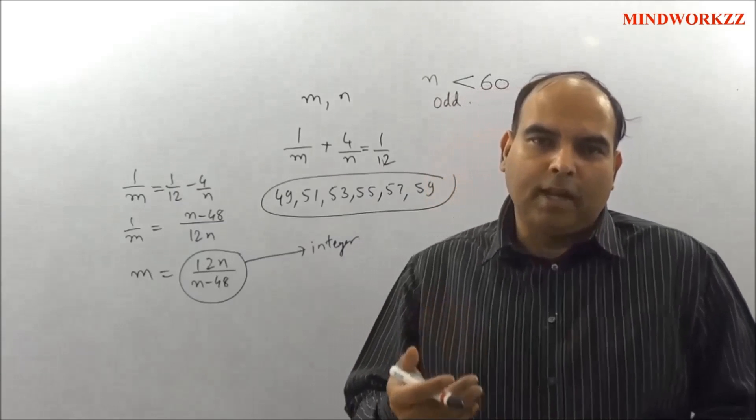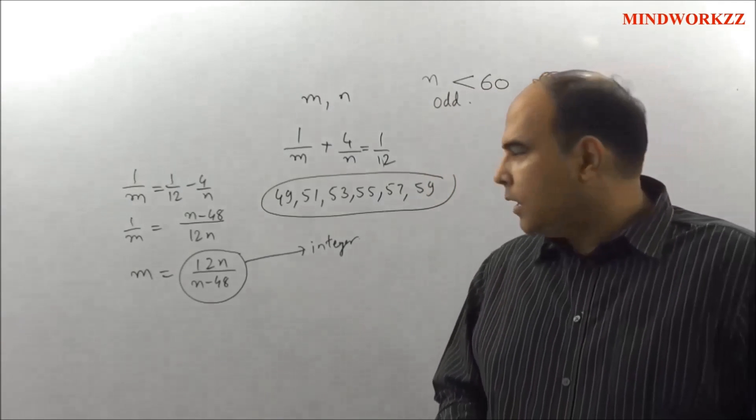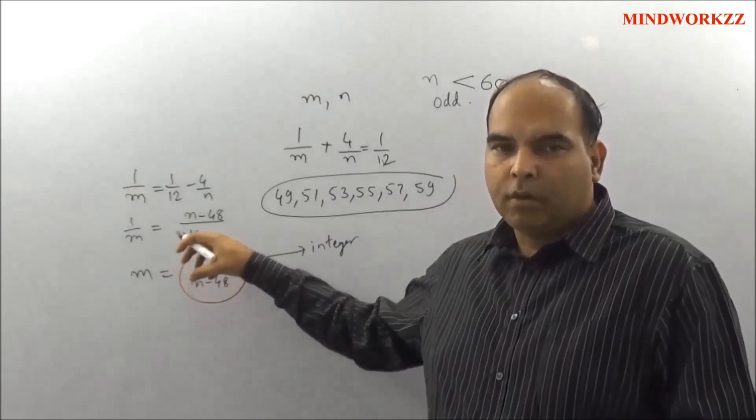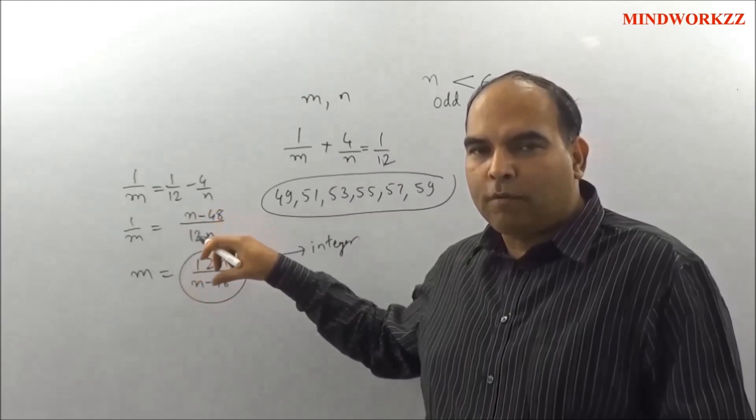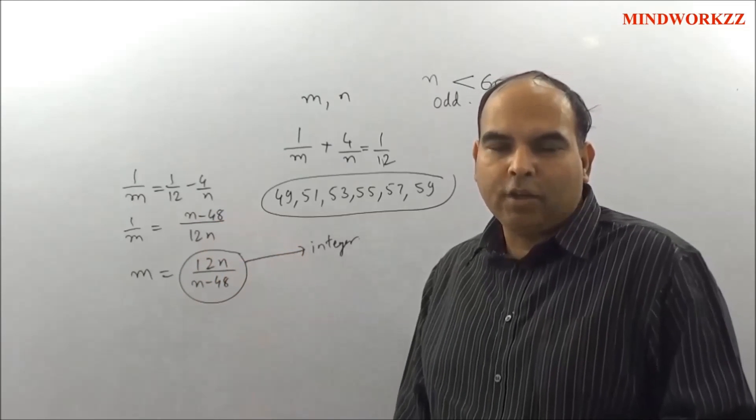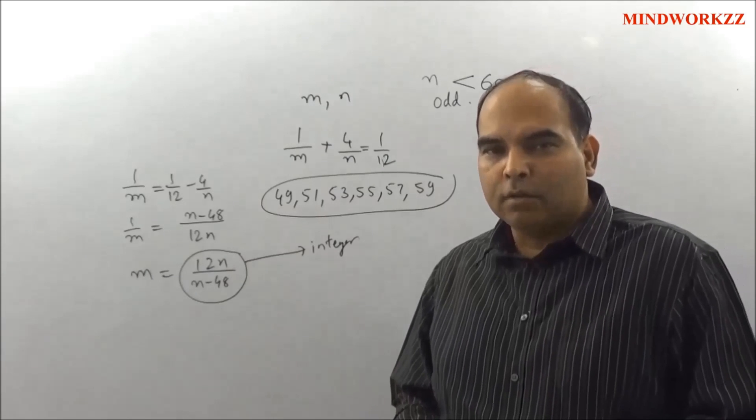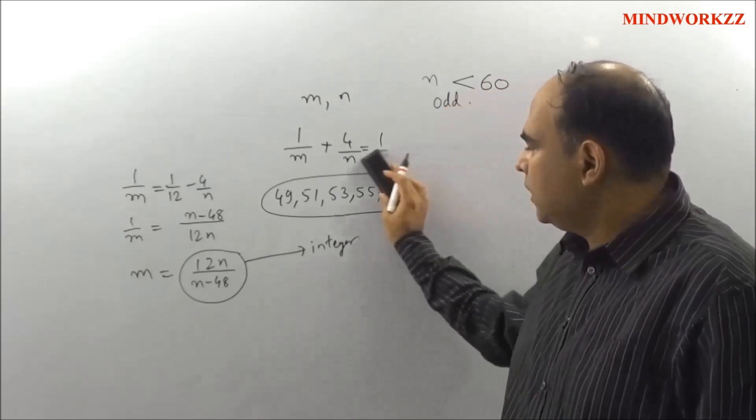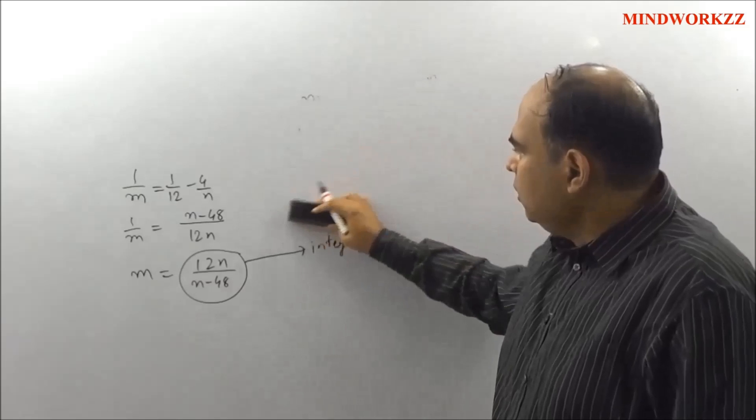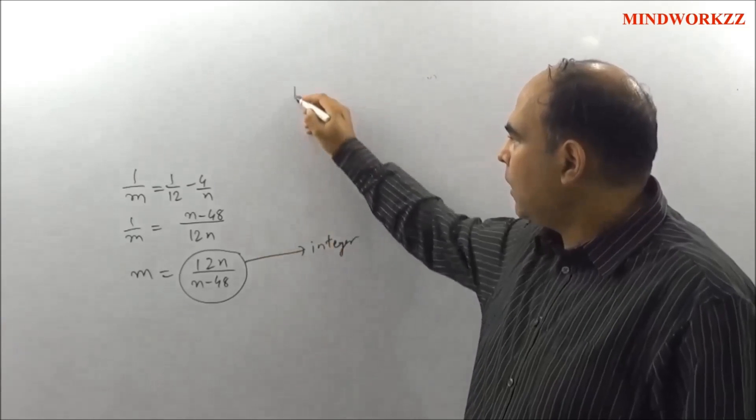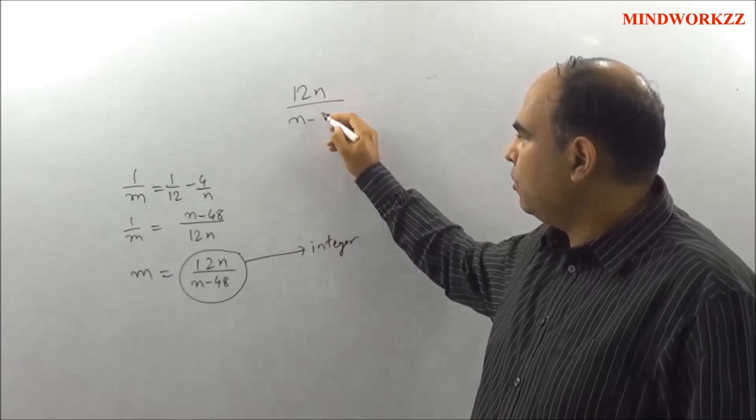The first thought was telling you that n has to be at least 49, and the second thought reaches this point where you want 12n/(n - 48) to be an integer. From this point, it is just a matter of fitting the values, because when you say that 12n/(n - 48) has to be an integer...